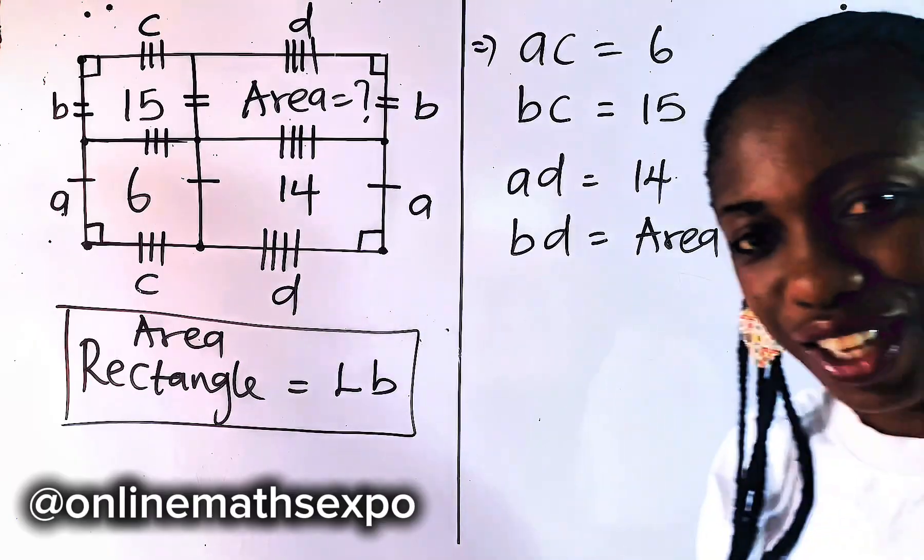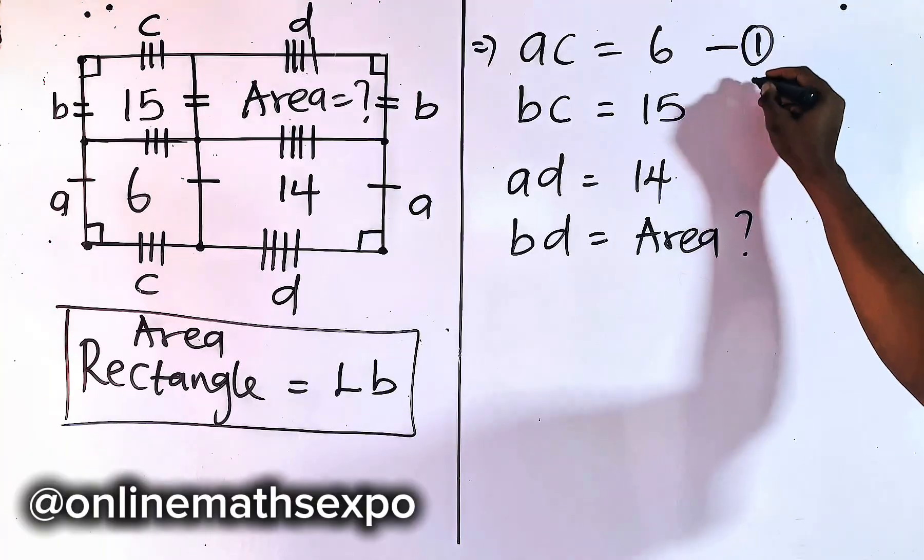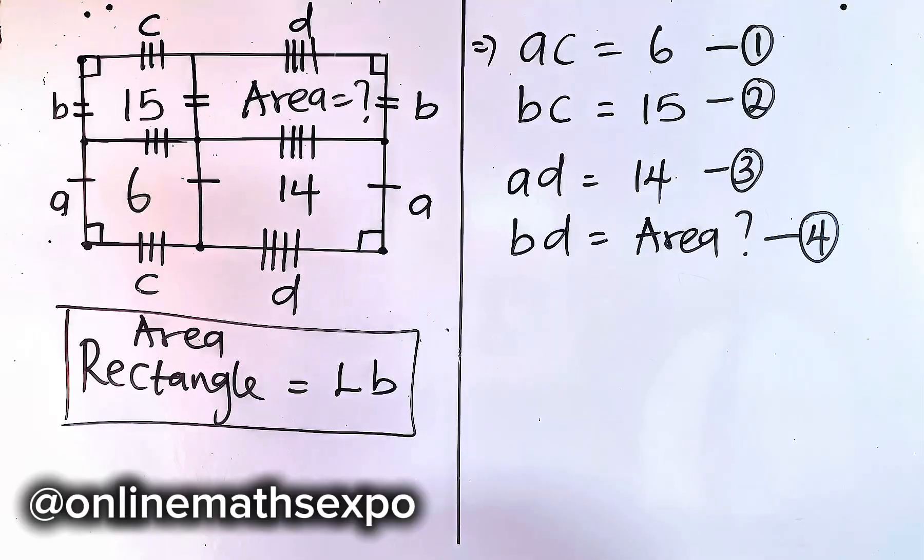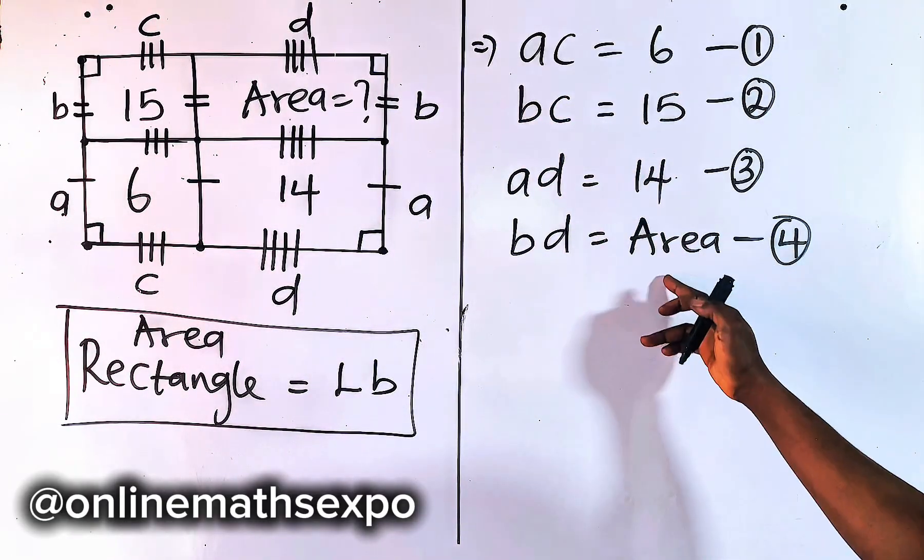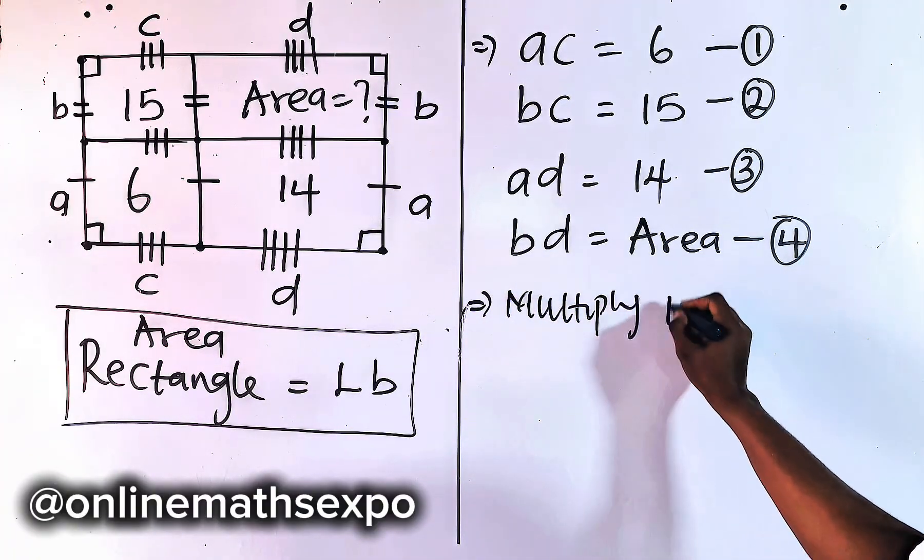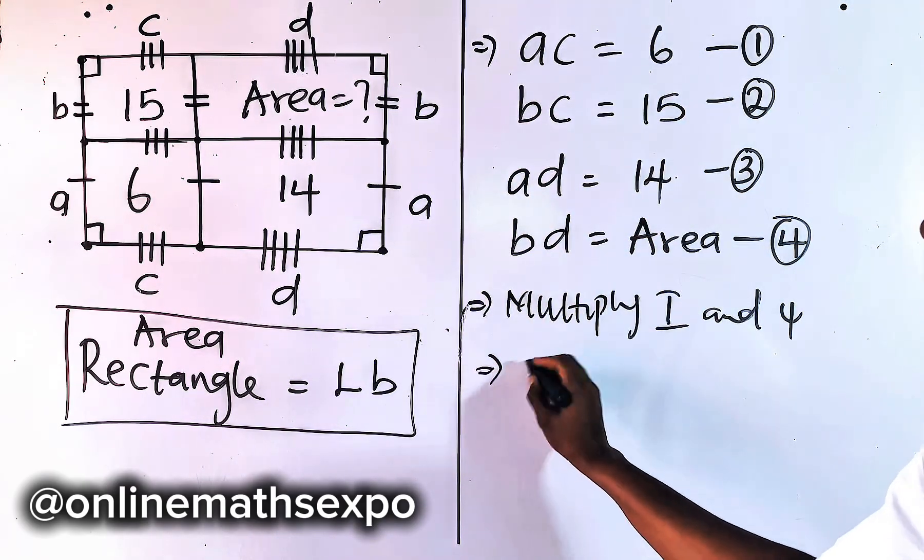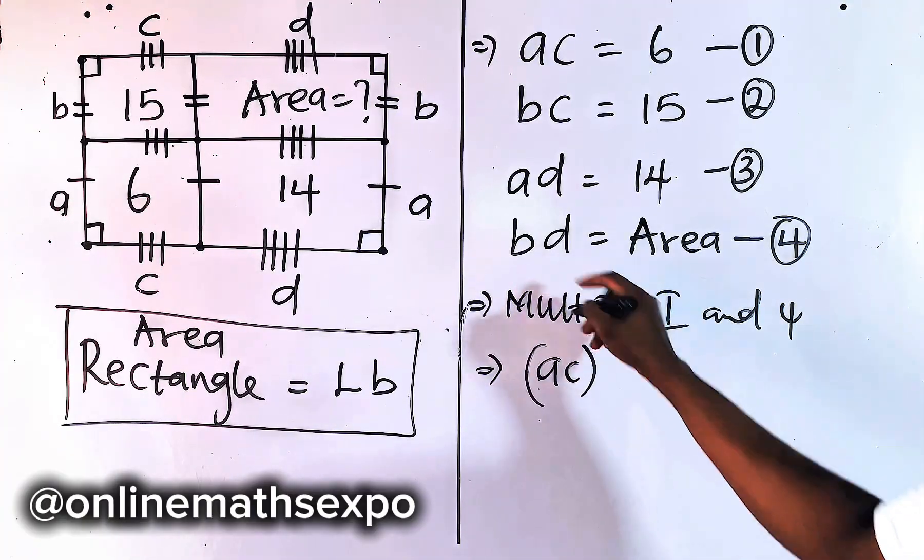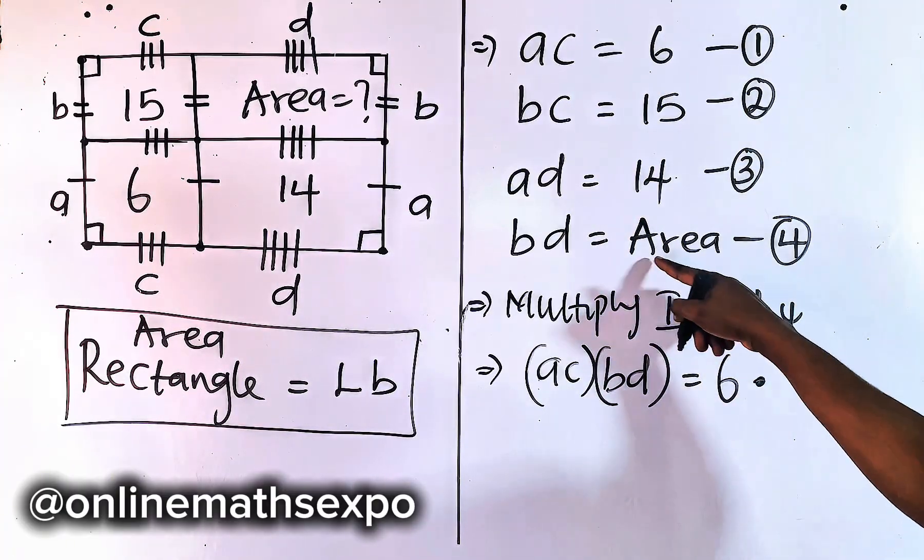Now, at this point, what do you think we should do? Now, what we do is, we can label this equation 1, this is equation 2, we can label this 3, and this is finally 4. So what trick did you discover? Let's multiply these two equations. So we multiply equation 1 and 4. So if you do that, we are going to have AC multiplies BD. And when we multiply, it's going to give us 6 multiplies the area.